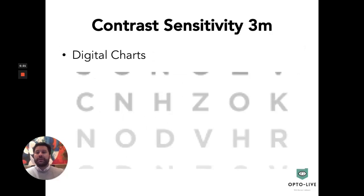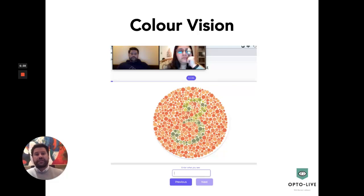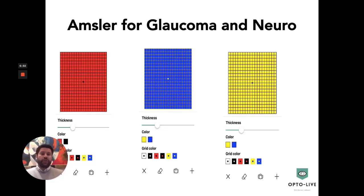Contrast sensitivity is also assessed — there's a digital chart available for that within the software. The next test we can conduct online is the color vision exam, where all of the Ishihara 24 plates are displayed and we can assess if there is any color vision defect. The other tests included are the Amsler tests, which come in the standard black and white, white on black combination, as well as other combinations for glaucoma and neurological disorders.